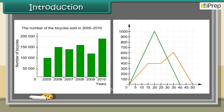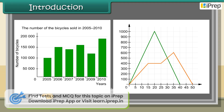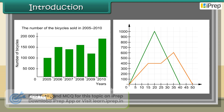Usually data can be presented in the form of a table. Graphs are visual representations of data. In this chapter, let us study histograms and line graphs. News channels and magazines use graphs to give a better understanding of the article.